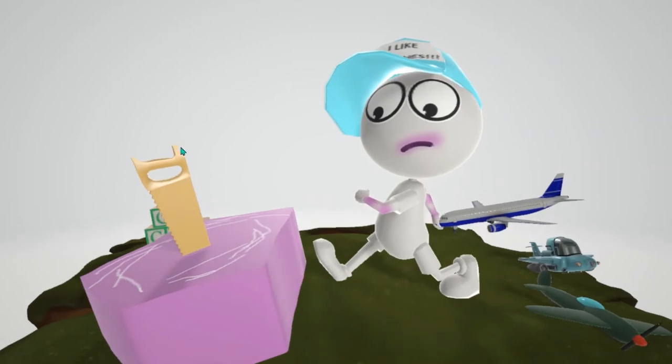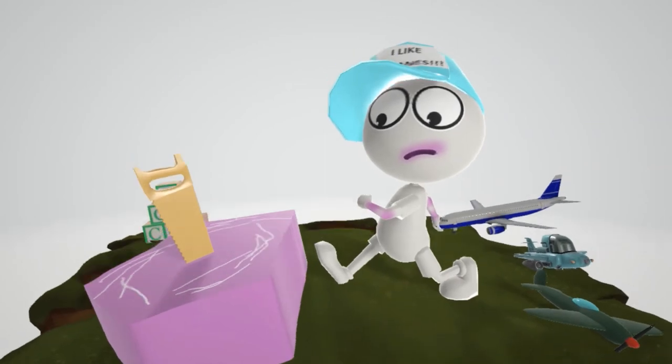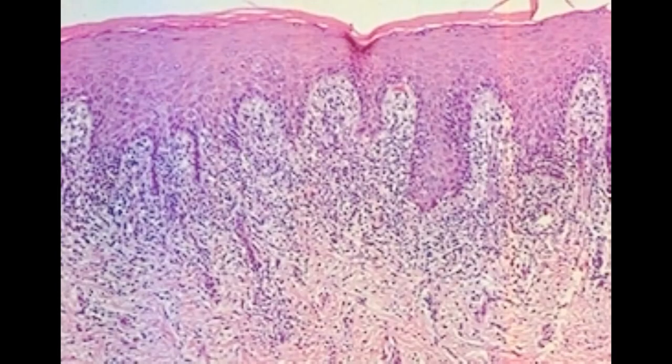Well the saw is to help us remember the sawtooth appearance that you could see on histology. This is due to the inflammation at the dermal-epidermal junction, as you can see in the picture.